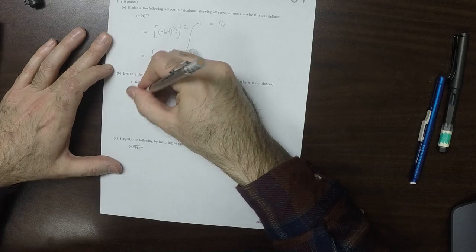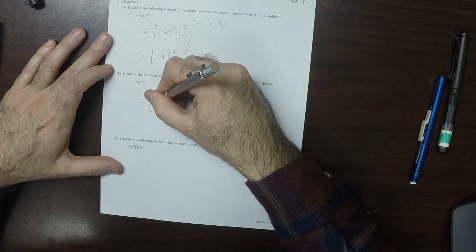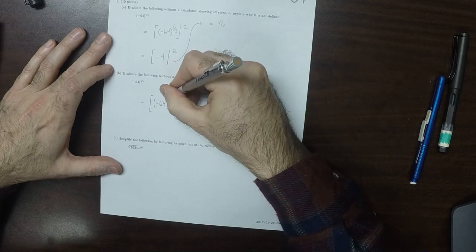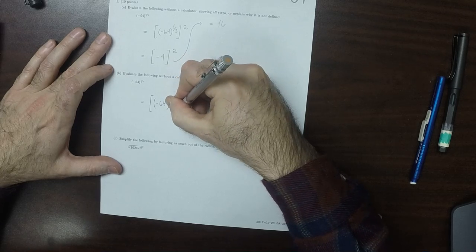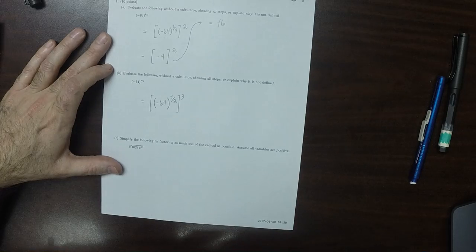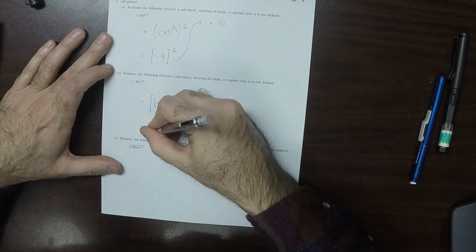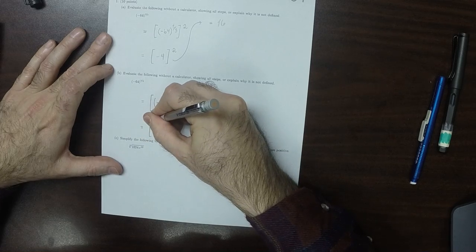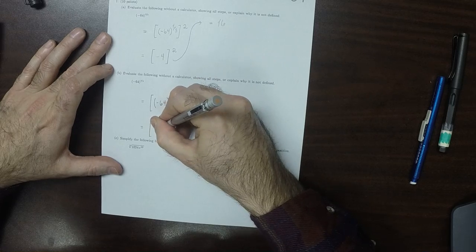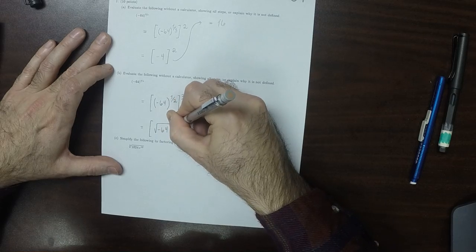Negative 64 to the 3/2, by definition, is negative 64 to the 1/2, to the 3rd power. If that's not clear, recall that fractional exponent 1/2 is square root. So what's being requested is the square root of negative 64 cubed.